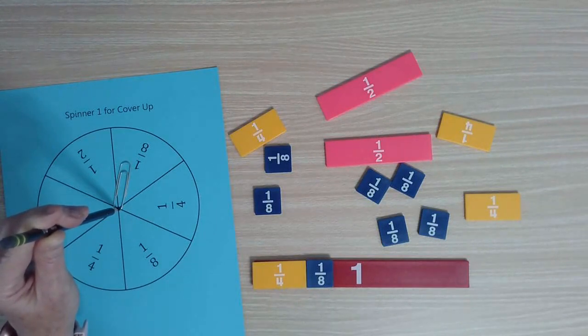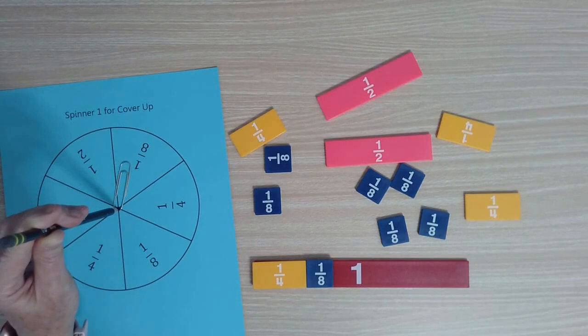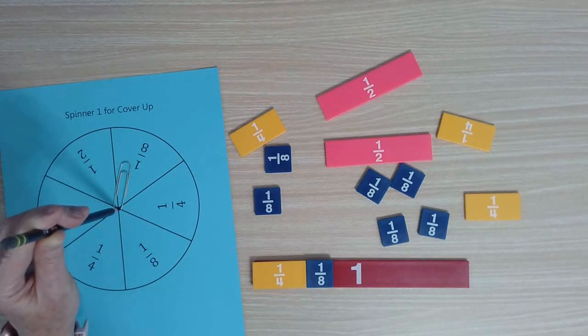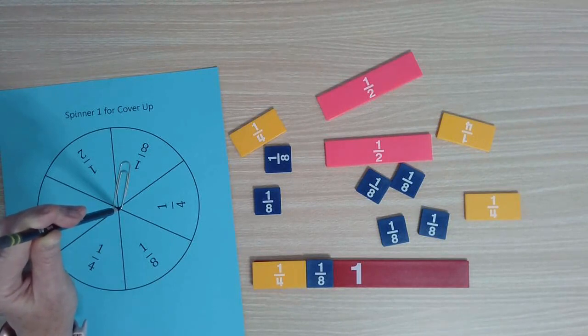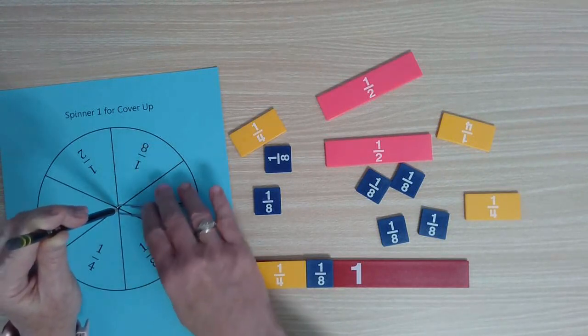What you want the students to verbalize is, well, with eighths, the whole is divided into eight parts, so those parts are smaller. With fourths, the whole is only divided into four parts, so those parts are larger. That's what we want them to understand.